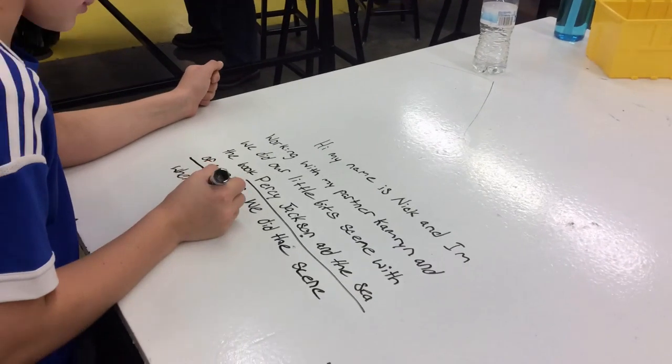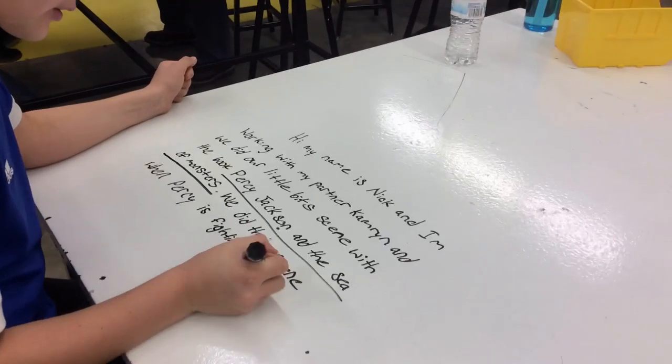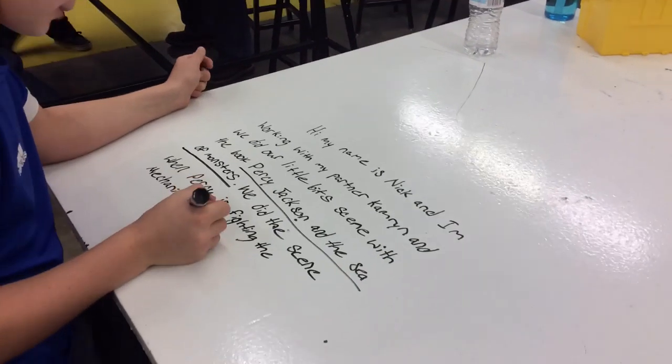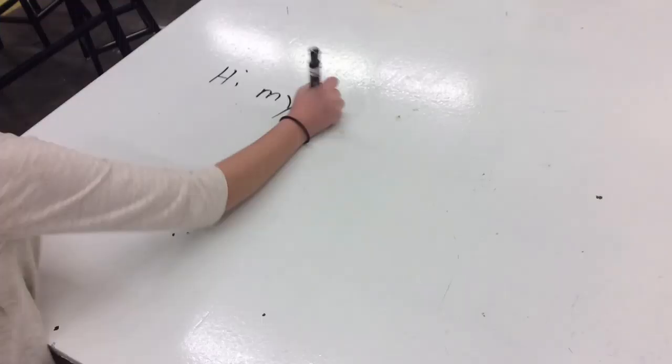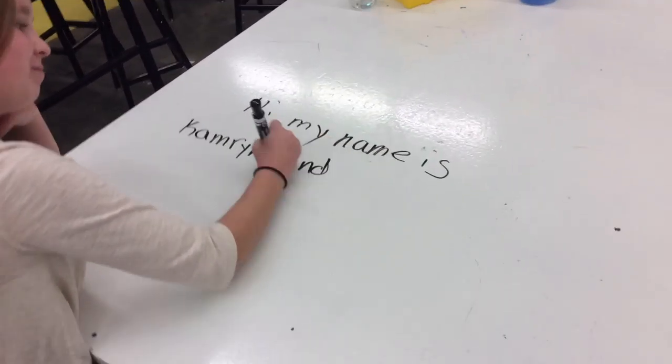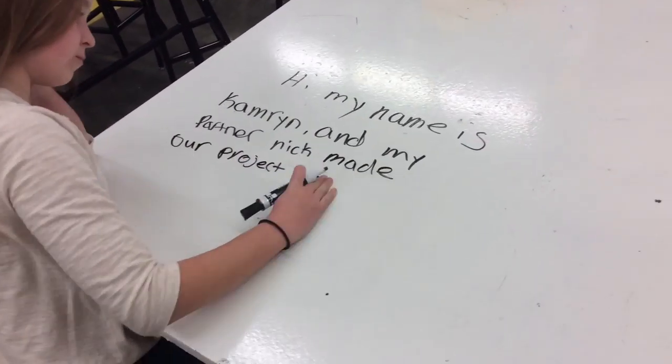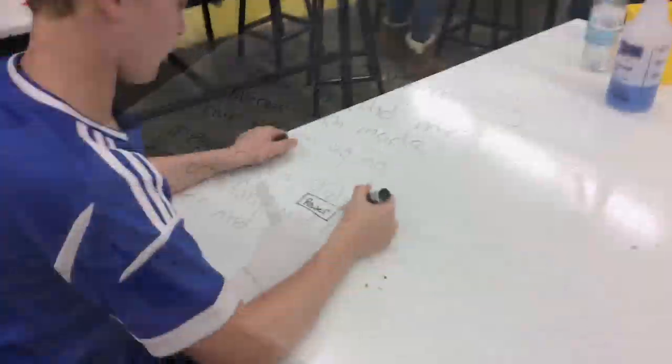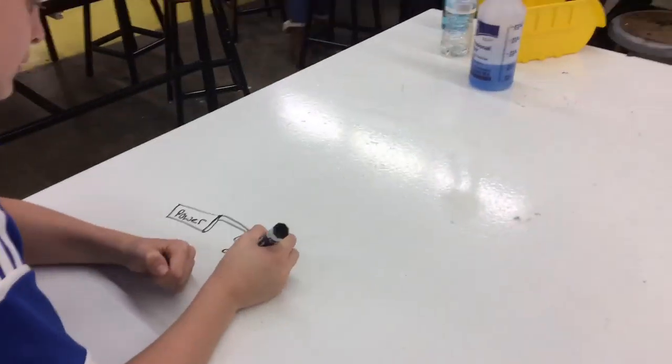We did the scene when Percy is fighting the mechanical bull. Hi, my name is Cameron. My partner Nick and I made our project using a power bit, a slide dimmer, a fan, and a DC motor.